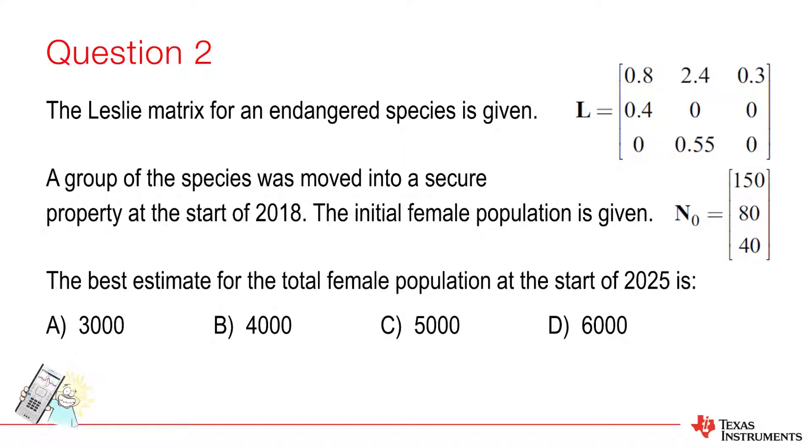Question 2. This question involves Leslie matrices and requires us to compute a sequence of matrix multiplications starting from 2018 through to 2025, 7 in total. So it's much quicker to define the matrices and use the calculator. Notice also that the question asks for the total female population, that is the sum of what we might assume to be immature, fertile and mature members.